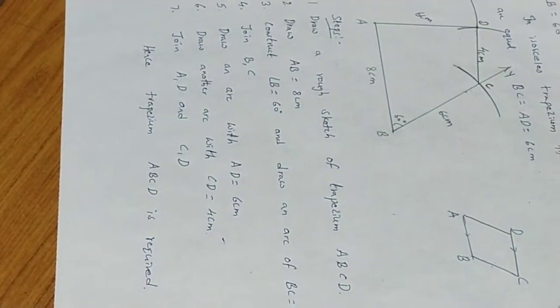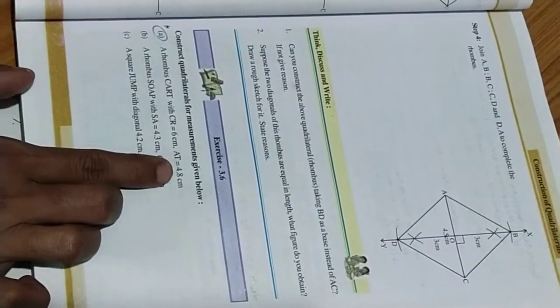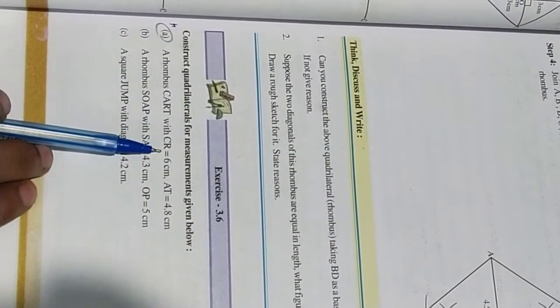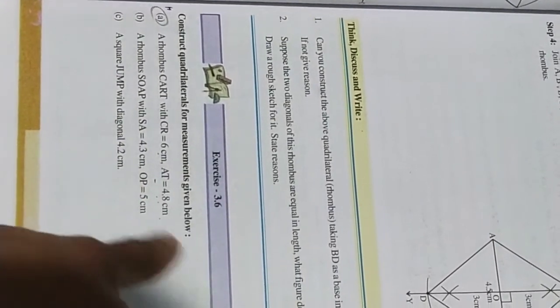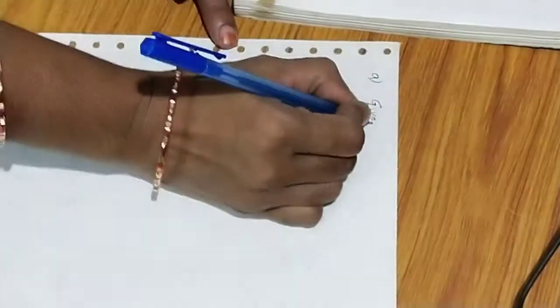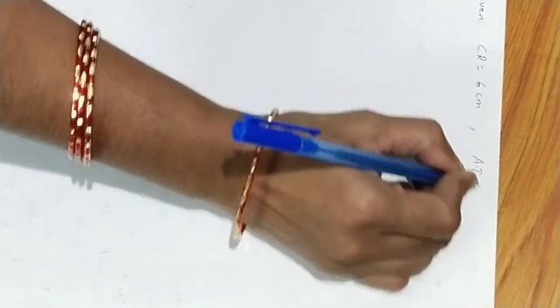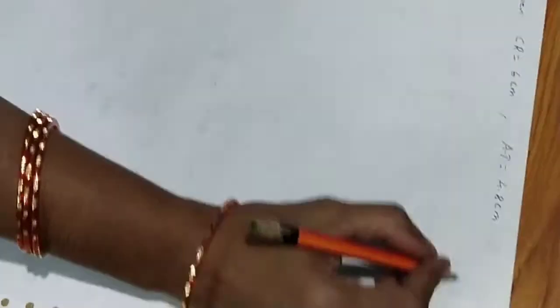Now we are going to the next exercise, 3.6 — construct quadrilaterals for the measurements given below. A rhombus CART with CR equal to 6 cm and AT equal to 4.8 cm. Now you have to construct the rhombus. Given: CR equals 6 cm and AT equals 4.8 cm. First, construct the rough sketch of the rhombus.